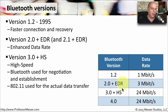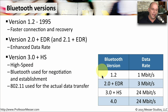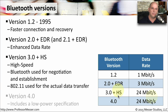Version 3.0 of Bluetooth was called 3.0 plus HS, where HS stands for high speed. It used Bluetooth to negotiate and establish the connection, but once the connection was up and running, it uses 802.11 to perform the actual file transfers. This gives us 24 megabits of throughput using 3.0 with high speed.